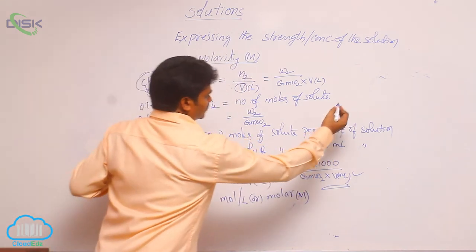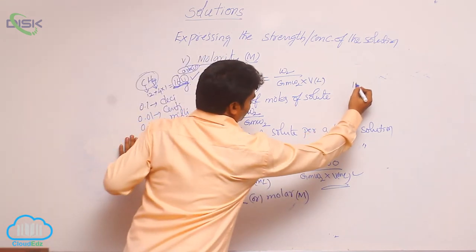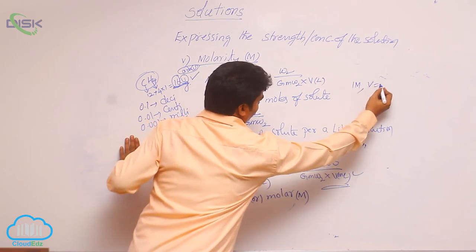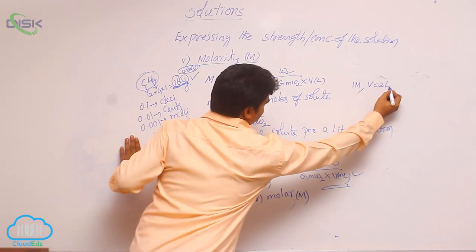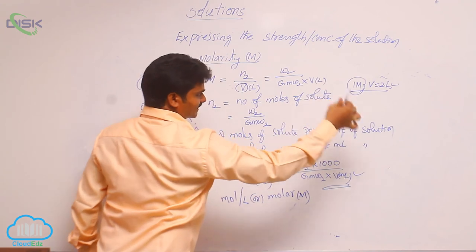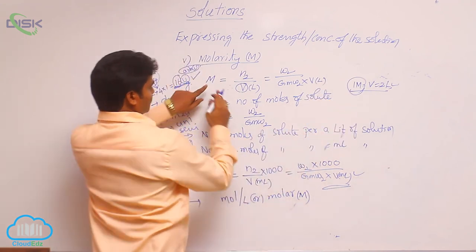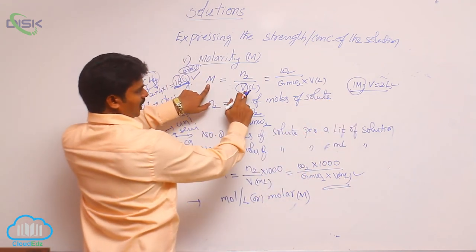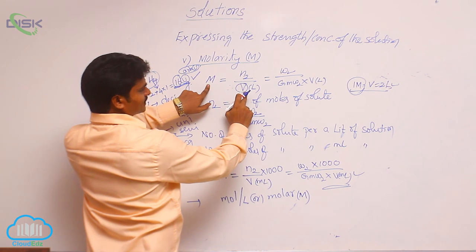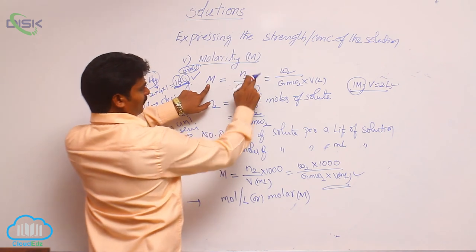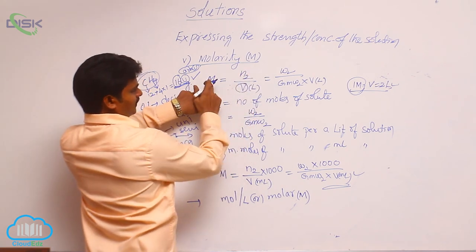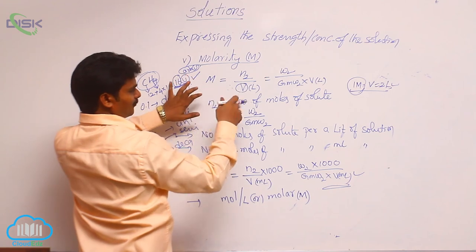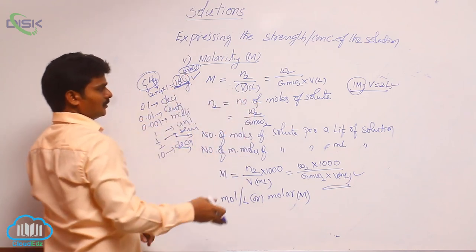Let us see one problem. Molarity of a solution is given as decamolar and volume is given as 2 liters. Deca means 10, so substitute molarity as 10 and volume as 2 liters. The number of moles are 10 into 2, which equals 20. So number of moles of solute is 20.